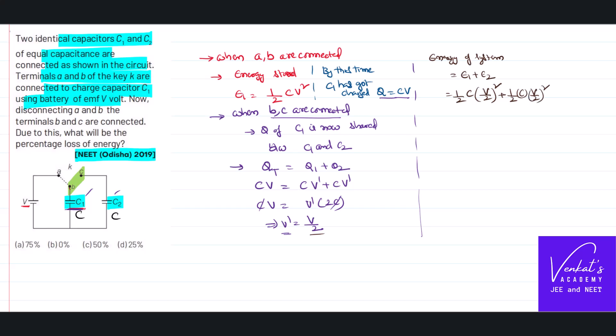The second capacitor, again half capacity is C, V is V by 2 whole square. So this value is half CV square by 4 and half CV square by 4. Both are same, so two times of half CV square by 4. So 1, 2 will cancel, CV square by 4. I can write CV square by 4 as 1 by 2, 1 by 2 into 1 by 2 CV square.